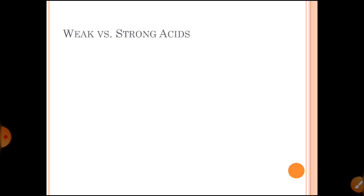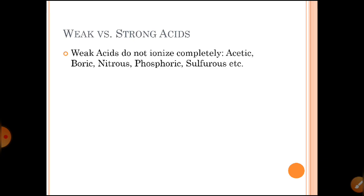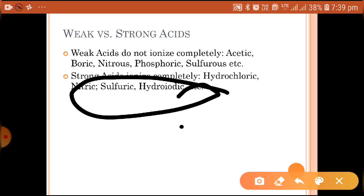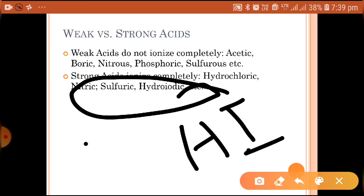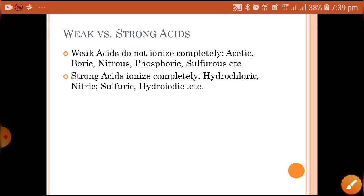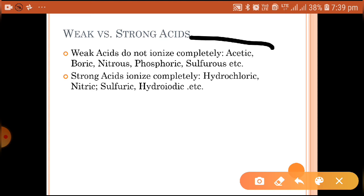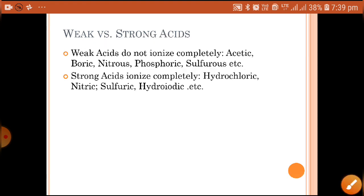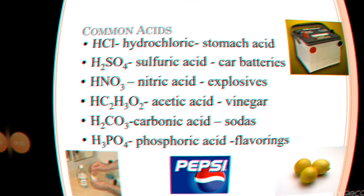Now, weak versus strong acids: if an acid dissociates or ionizes completely — forming maximum ions — it is a strong acid. Examples are nitric acid, sulfuric acid, and hydroiodic acid (HI). If an acid does not ionize completely, it is a weak acid — examples are acetic acid, boric acid, phosphoric acid, and sulfurous acid. Weak acids form very few ions in water, while strong acids form maximum ions.